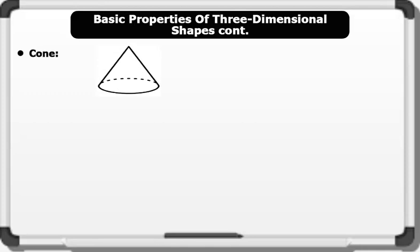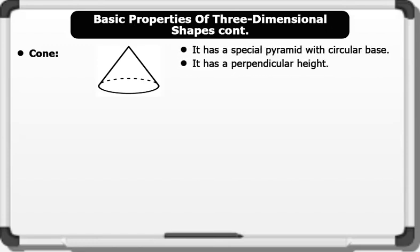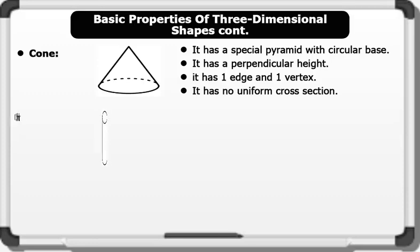The cone: properties of a cone include it has a special pyramid with circular base, it has a perpendicular height, it has one edge and one vertex, and it has no uniform cross section.